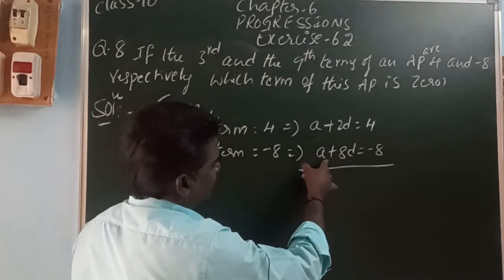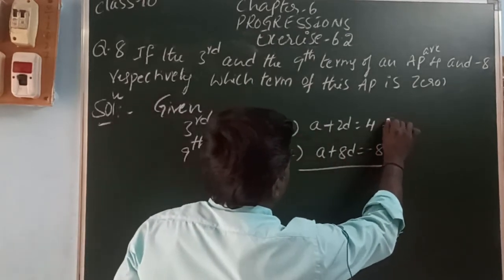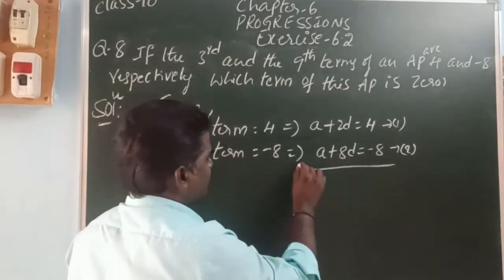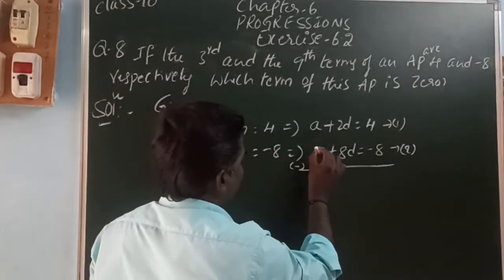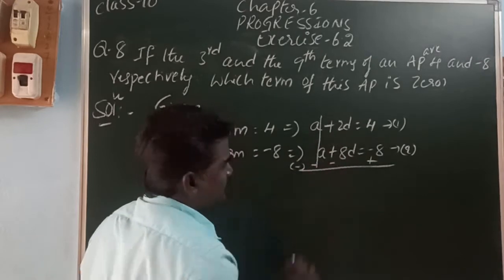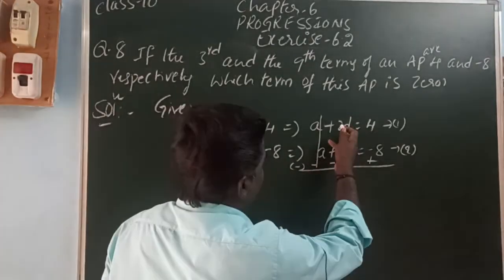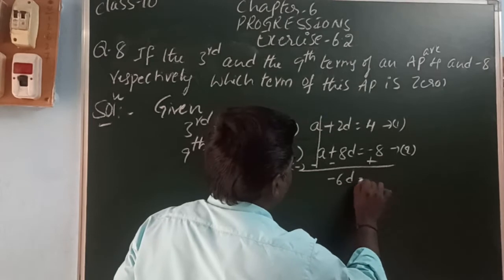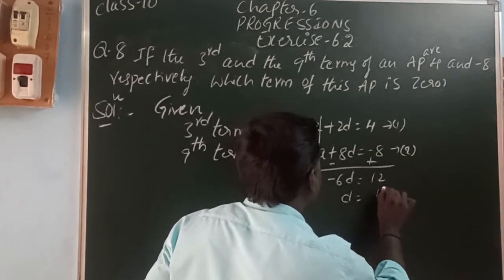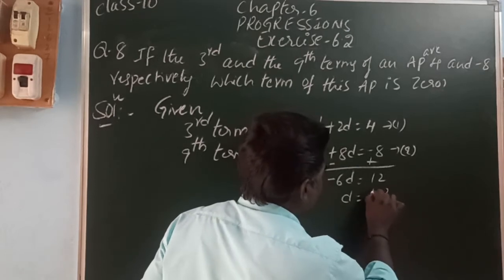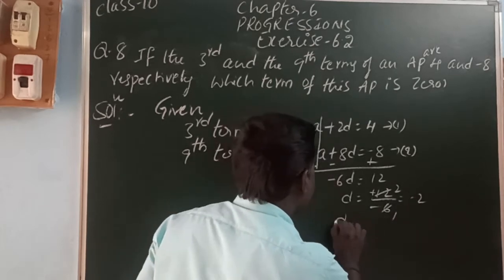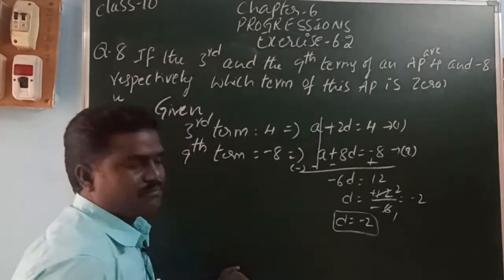So, here, the second equation is subtracted from the first equation. When you subtract the second equation from the first equation, the signs change — plus becomes minus, plus becomes minus, minus becomes plus. So, plus A minus A cancel. Plus 2D minus 8D is minus 6D. So, 4 plus 8 is 12. D is equal to 12 by minus 6. Plus by minus gives minus 6D. So, D is equal to minus 2. The common difference is minus 2.